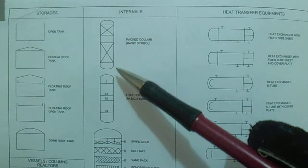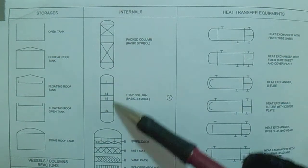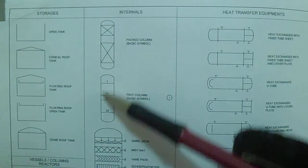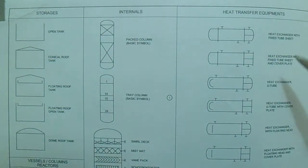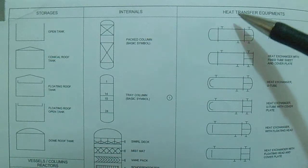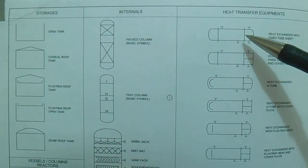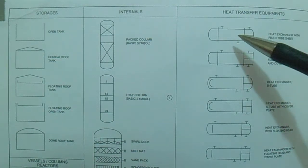Next is internals. We have a packed column and a tray column — these are the basic symbols only. Next we have heat transfer equipment.